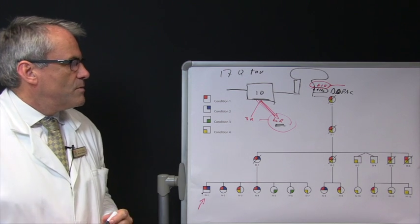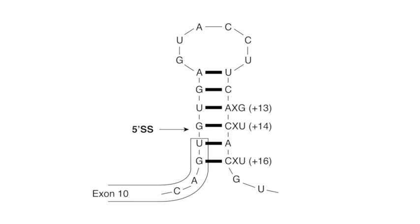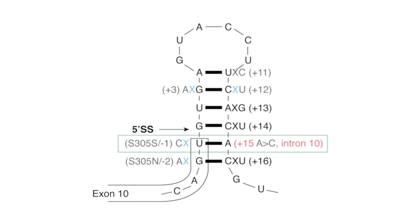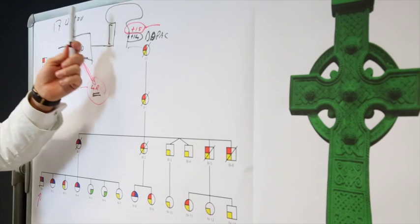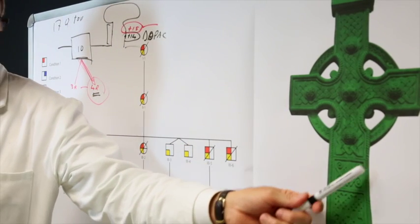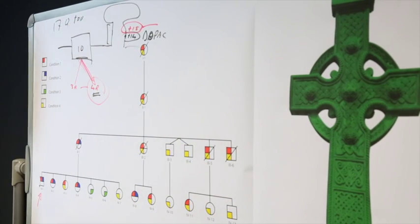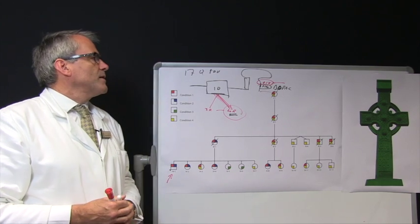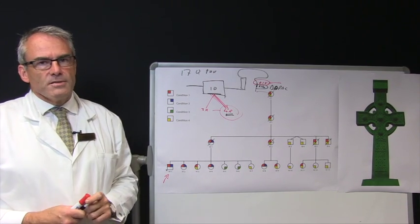So this family closes the tau loop. Having opened the loop with the plus 14 identification in the DDPAC Irish-American family, we have now identified an Irish-English family with a plus 15 mutation, closing the tau loop — which happens to be similar in shape to a Celtic cross, this being the stem loop area. Having opened the loop in 1998, we now close the loop in 2015.